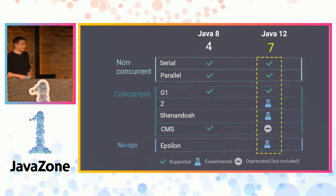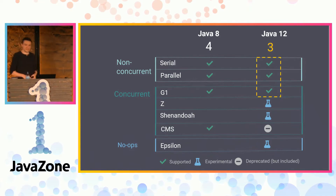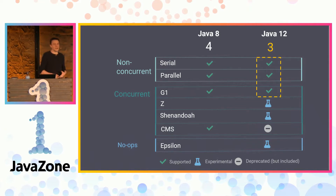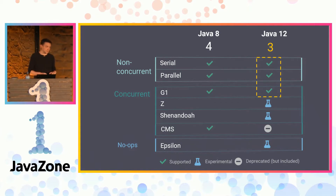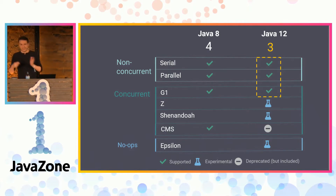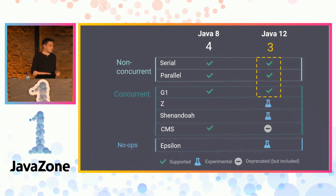If you answered three, well, you were right too, because only three are supported in production environments. Three are experimental and one is deprecated since Java 9 — we are talking about CMS. So if you are still using this garbage collector, it's time to switch. In Java 14, the code will be eliminated from the JVM and it won't work anymore.